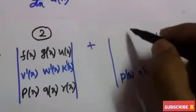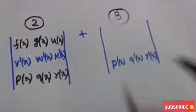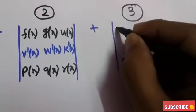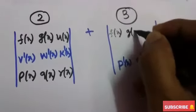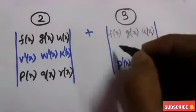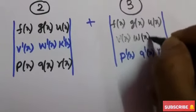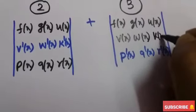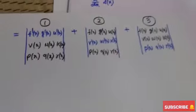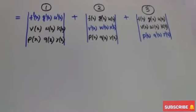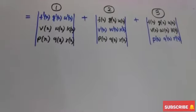Similarly, in the third determinant, the third row is differentiated individually. The elements of the third row p(x), q(x), r(x) become p'(x), q'(x), r'(x). The first row and second row will remain unchanged: f(x), g(x), u(x) and v(x), w(x), k(x). This is the derivative of a third order determinant.